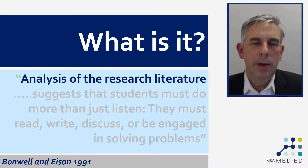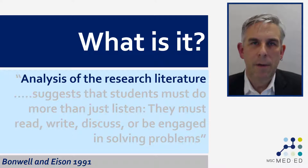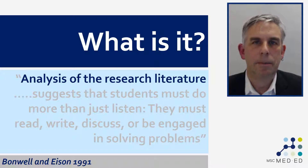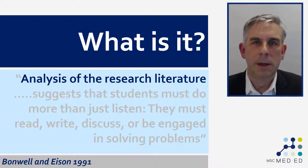Let's go back to that Bonwell and Eisen definition again. In the original paper, Bonwell and Eisen cite a review, and if we go to that review and look at the research literature that's analyzed, unfortunately there isn't really any there. It's really an opinion piece about how to organize higher education. There isn't really a huge amount of research literature supporting the following sentence. There is a lot of information out there about how students learn and why people learn, and we're going to cover some of it here and in other videos, but it still doesn't get us any closer to an understanding of what active learning actually is.